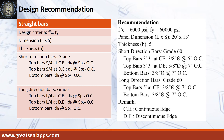Design recommendations: f'c equals 6,000 PSI, fy equals 60,000 PSI, panel dimension 20 feet by 13 feet, thickness 5 inches. Short direction bars, Grade 60: top bars at continuous edge — 3/8-inch diameter bar at 5 inches on center; top bars at discontinuous edge — 3/8-inch diameter bar at 7 inches on center; bottom bars — 3/8-inch diameter bar at 7 inches on center. Long direction bars, Grade 60: top bars at continuous edge — 3/8-inch diameter bar at 7 inches on center; bottom bars — 3/8-inch diameter bar at 7 inches on center.